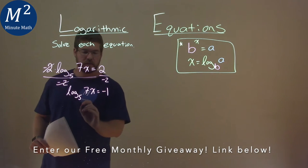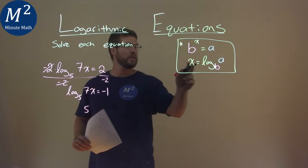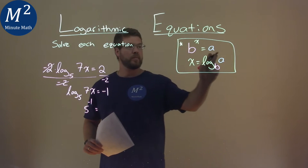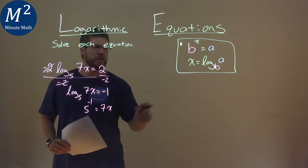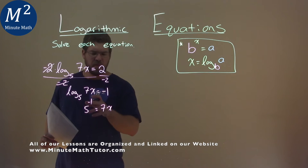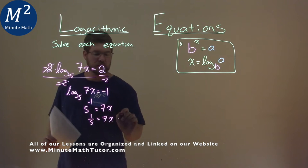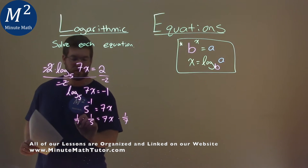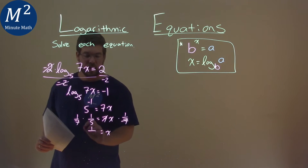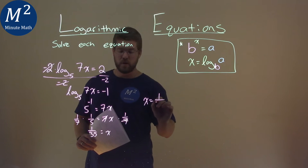Our base b is 5. So this converts to 5 raised to the exponent on the outside — which is negative 1 — equal to what's inside the logarithm, which is 7x. 5 to the negative 1 power is 1 fifth, so 1 fifth equals 7x. I multiply both sides by 1 seventh. These cancel, and we're left with x equals 1 seventh times 1 fifth. 7 times 5 is 35, so we have 1 over 35. Our final answer is x equals 1 over 35.